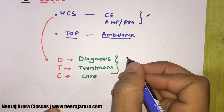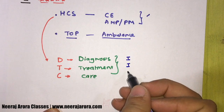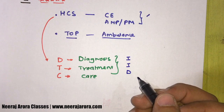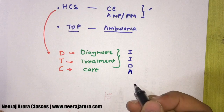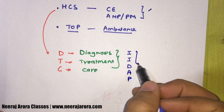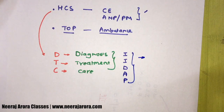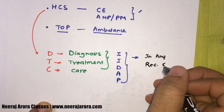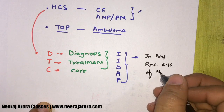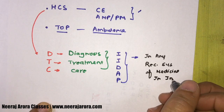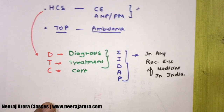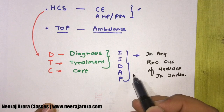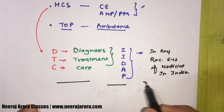Diagnosis, Treatment, Care - yeh teeno cheezein. Ab yeh teeno cheezein kin kin ke liye ho sakti hain? Illness - bimari, Injury - chot, Deformity - koi body part hat gaya ho, Abnormality, aur Pregnancy. Right. Toh diagnosis, treatment, care agar in cheezon ke liye ho rahi hai, aur in any recognized system of medicine in India - toh aapki jo service hai, woh health care service hai.